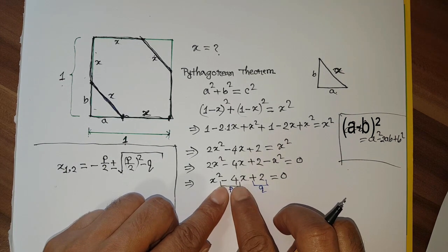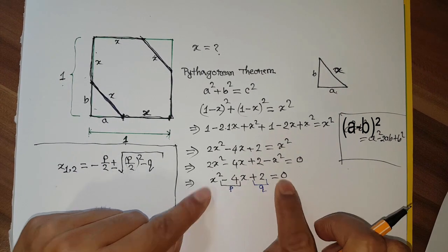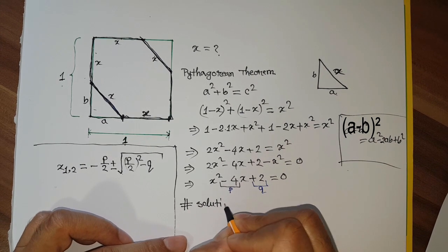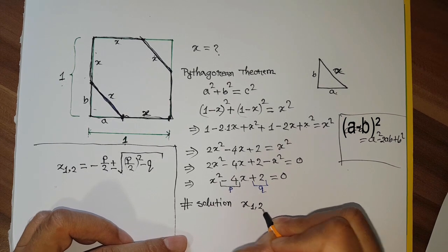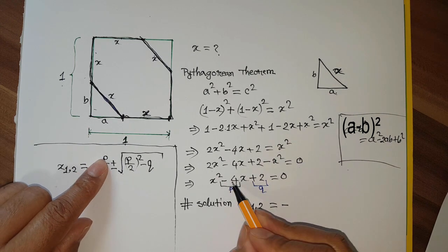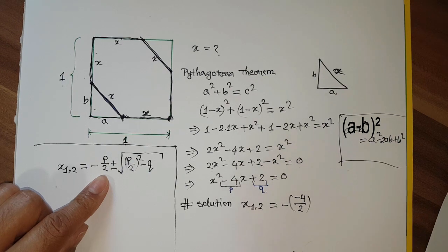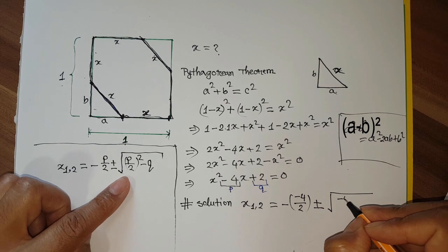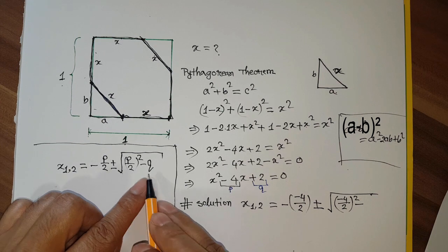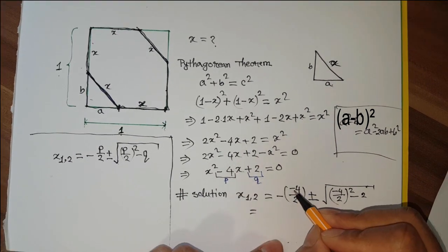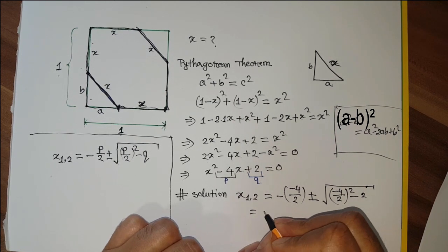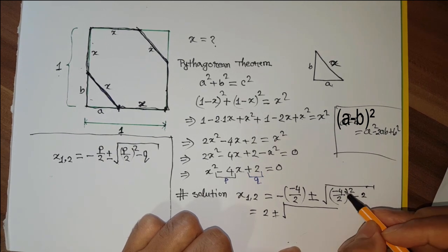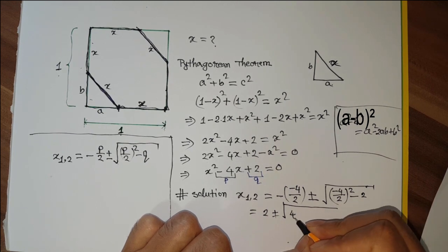Substituting P = -4 and Q = 2 into the formula: X₁,₂ = -(-4/2) ± √((-4/2)² - 2). That gives us minus of minus 2, which is plus 2, plus or minus the square root of (2² minus 2), which is the square root of (4 minus 2), so the square root of 2.